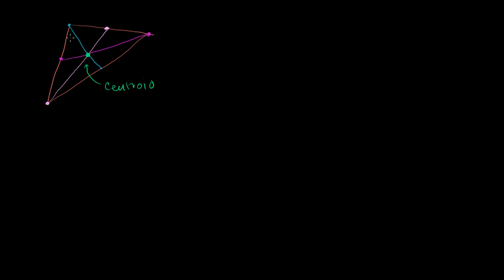And if this was actually a physical triangle — let's say you made it out of iron — the centroid would actually be the center of mass. So if this is an iron triangle with its centroid right over here, then this iron triangle's center of mass would be where the centroid is, assuming it has a uniform density. And if you were to throw that iron triangle, it would rotate around that centroid, or around the center of mass.